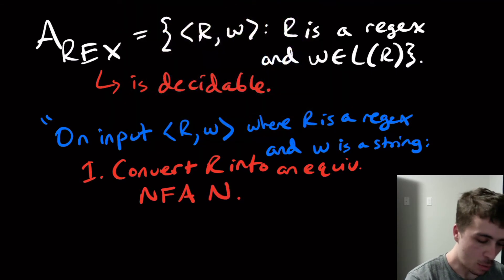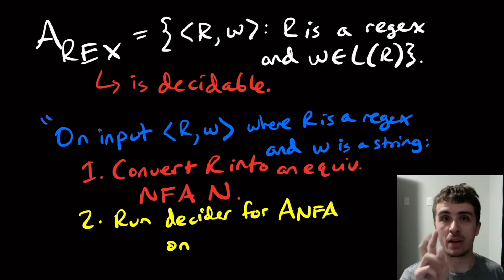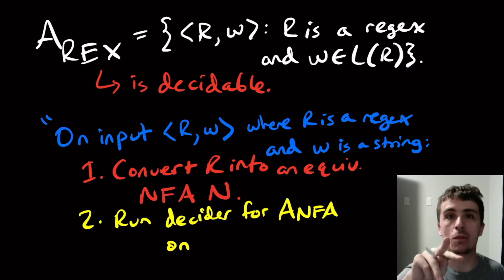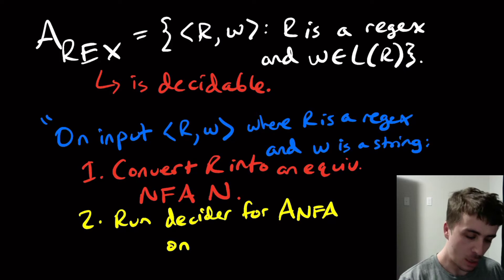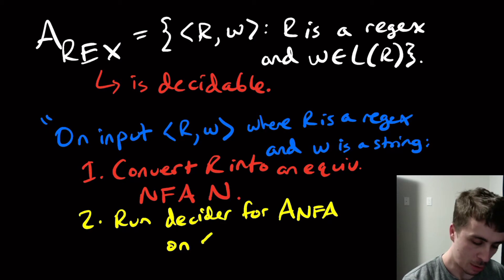And what I want to do then is to run the decider for a sub nfa on, well, I need to provide it two inputs, the first one being an nfa and the second one being a string. Well, here I have an nfa, which is called n now and the input string, which is w. So here is going to be n and w.